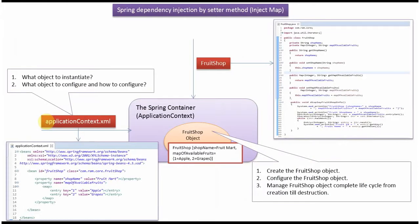The Spring configuration file specifies what object to instantiate, what object to configure, and how to configure it. In this example, we have specified that the FruitShop object should be created by the Spring container using setter-based dependency injection. The Spring container reads this configuration file, creates the FruitShop object, configures it, and manages the complete life cycle of the FruitShop object.